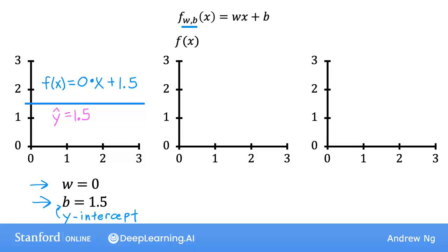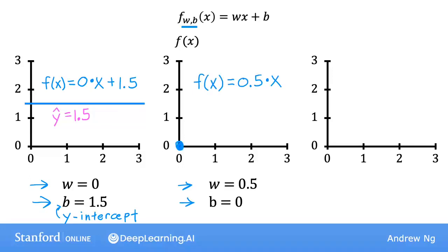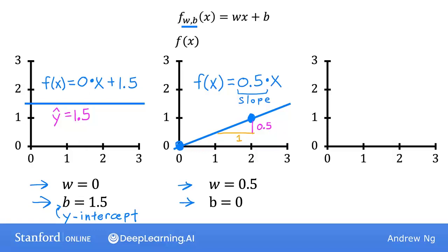As a second example, if w is 0.5 and b is equal to 0, then f of x is 0.5 times x. When x is 0, the prediction is also 0. And when x is 2, then the prediction is 0.5 times 2, which is 1. So you get a line that looks like this. Notice that the slope is 0.5 divided by 1, so the value of w gives you the slope of the line, which is 0.5.